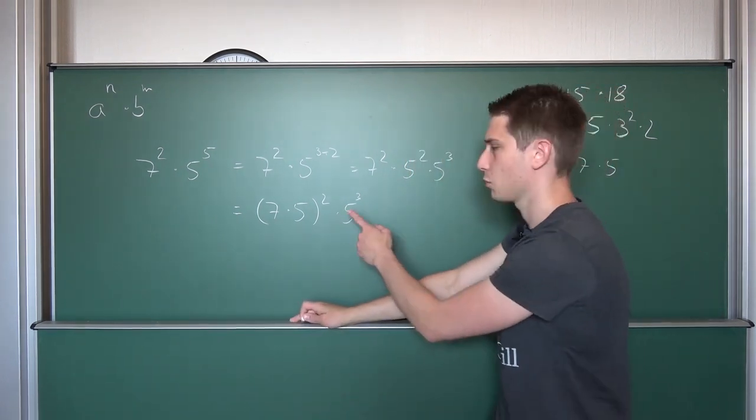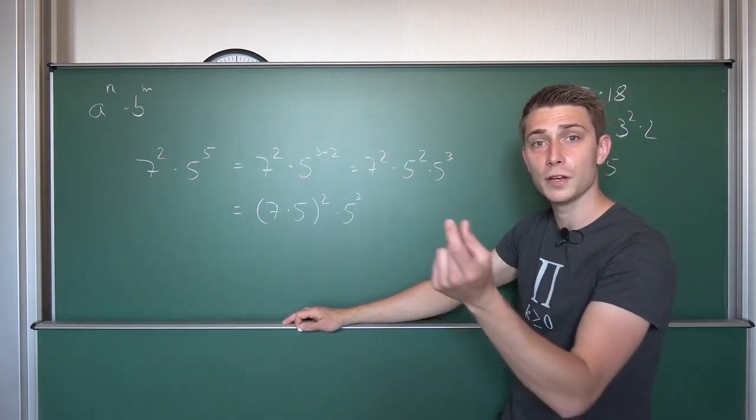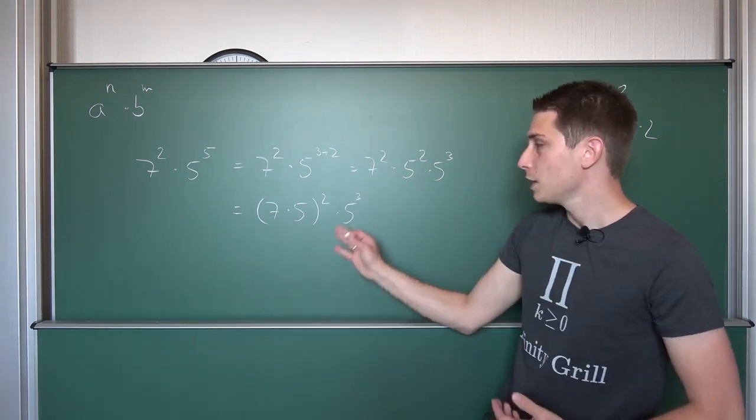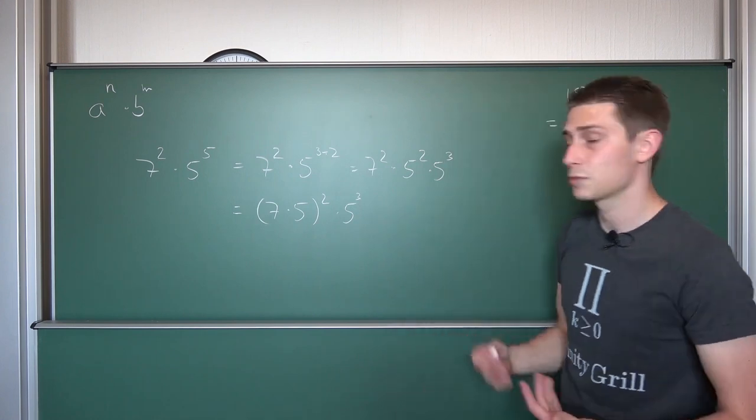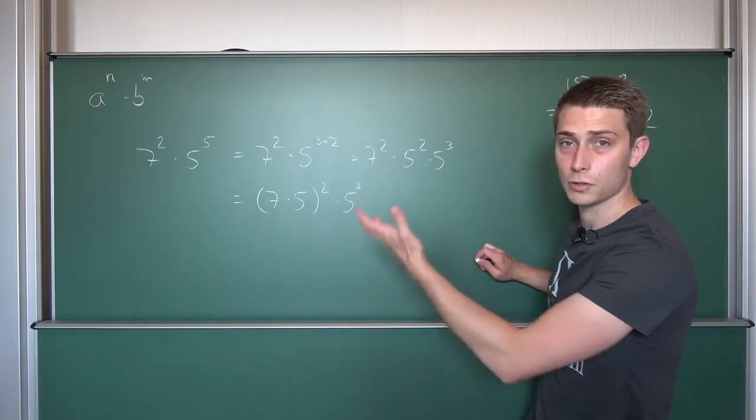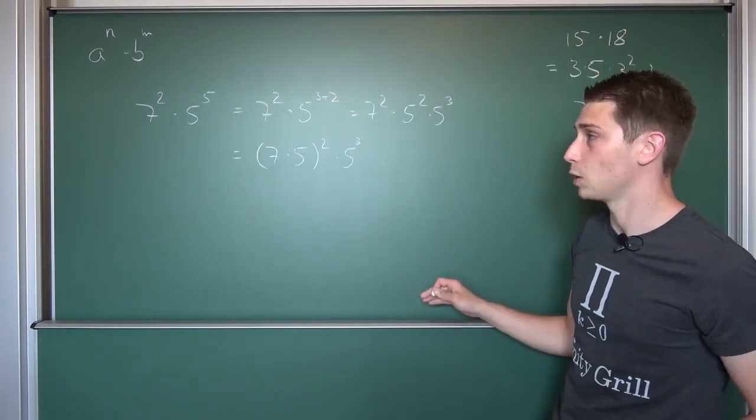And maybe you can reduce it even more. So 5 to the 3rd power is 5 to the 2 plus 1th power and then you can collect even more like terms. This is something you can do. But I think you can get the point now. It's quite easy.